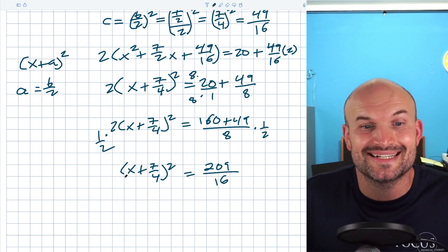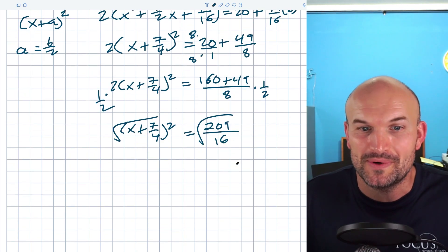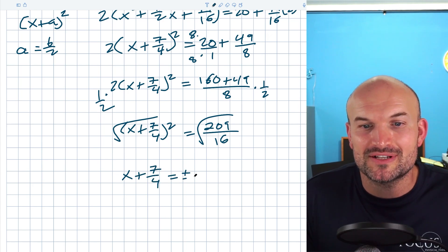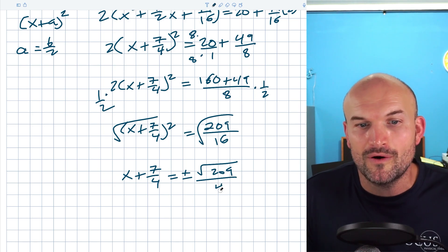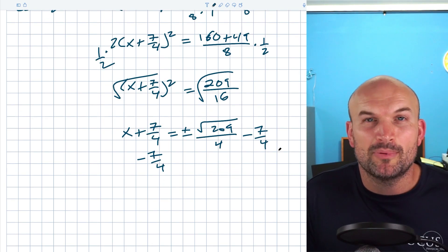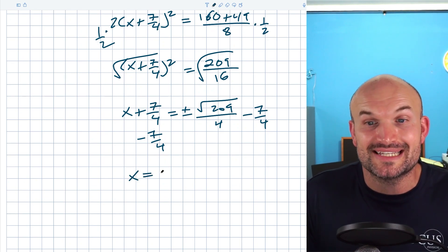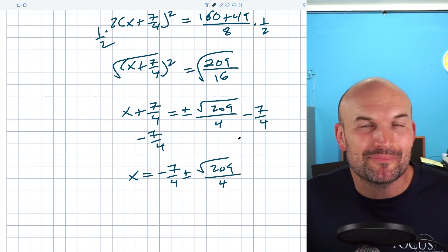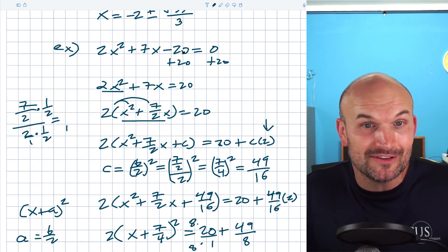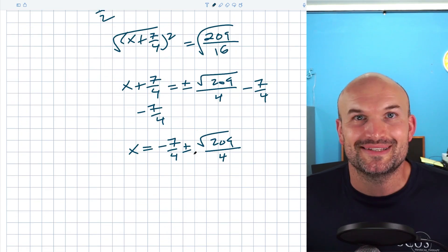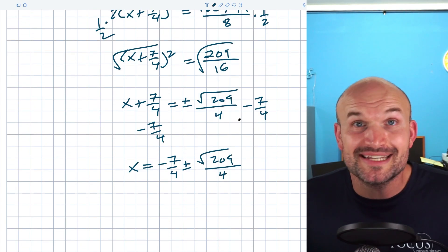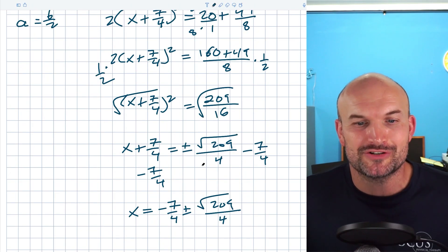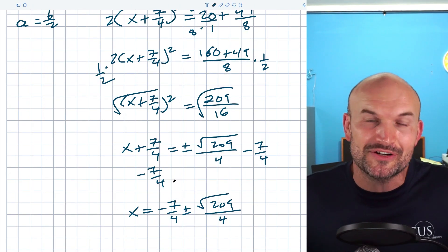Taking the square root of both sides — √16 = 4 — gives x + 7/4 = ±√209/4. Subtracting 7/4 from both sides, the final answer is x = (−7 ± √209)/4. That's a pretty complex-looking solution. You can see how completing the square was definitely hard here, but looking back at the original problem, factoring would have been really difficult as well.